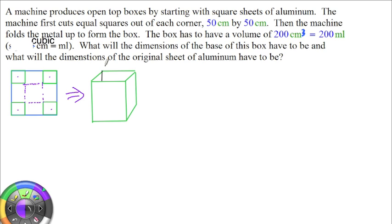The question is asking, what dimensions will this base have after you're done? And what dimensions of the original sheet of aluminum did you have to start with to end up with a 200 cubic centimeters or 200 milliliter container?